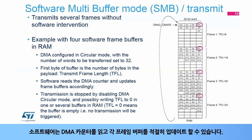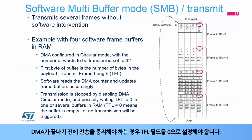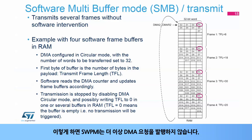Software can read the DMA counter and update each frame buffer accordingly. In this example, three frames can be transmitted without software intervention. The transmission is stopped by disabling DMA circular mode. In case you need to stop transmission before the DMA end of count, you must set the TFL field to zero. This way, the SWPMI will no longer issue any DMA requests.